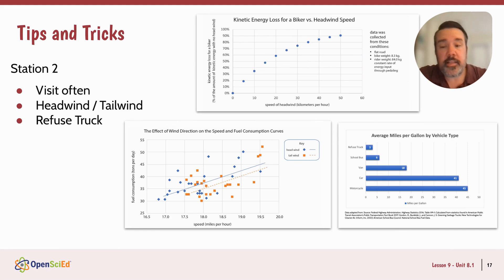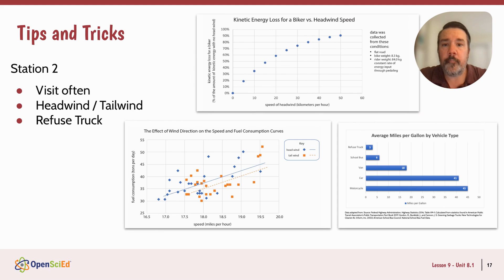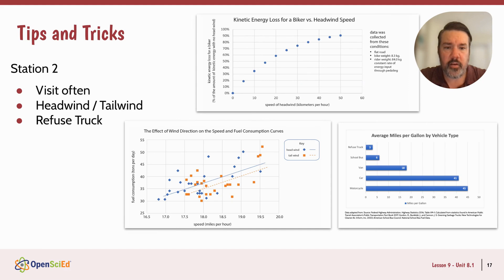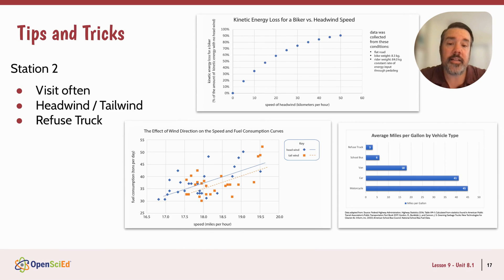Station two is probably the place you'll want to visit often and check in with students — these graphs are pretty challenging. I'd let students grapple with them for a bit, then go visit. There are words students don't necessarily know, like headwind and tailwind, and items like average miles per gallon listed for something like a refuse truck. There's a lot of unpacking needed. Kids can generally get the trends, but the miles per gallon graph can be tricky since kids don't drive. Once they understand what they're looking at, they can make a lot of sense of it. Check in with this station each time a new group arrives.